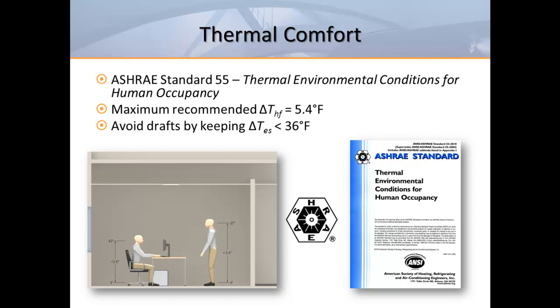In addition, we need to pay attention to the difference between the supply and exhaust temperatures. As a rule of thumb, exhaust temperatures should not be more than 36 degrees higher than the supply temperatures to avoid a sensation of draftiness. Now obviously, at no more than 1 degree per foot, it would take an extremely high ceiling to get close to a 36 degree temperature differential.